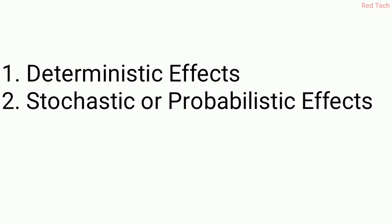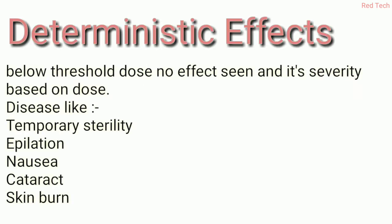The deterministic effect occurs below the threshold dose, where no effect is seen below that level. Its severity is based on how much dose the worker is affected by. Diseases that may impact a person include temporary sterility, epilation, nausea, cataract, and skin burn.